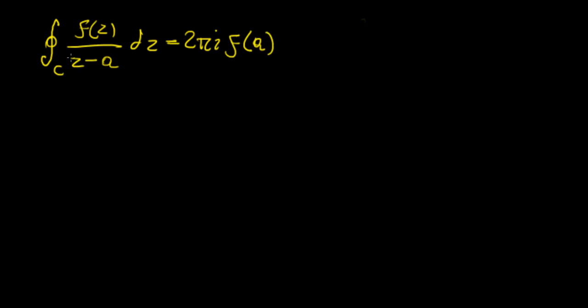This equals 2πi times the function evaluated at that point a, where a is basically the point that gives us a pole or singularity for this function. So that's the one point this function is not analytic at, and this is how we calculate it directly. There's an extension of this theorem, of this formula.